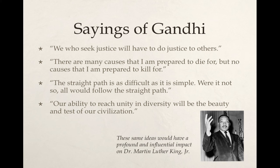Some sayings of Gandhi that give a good idea of what he was trying to do: 'We who seek justice will have to do justice to others.' 'There are many causes that I am prepared to die for, but no causes that I am prepared to kill for.' 'The straight path is as difficult as it is simple.' 'Were it not so, all would follow the straight path.' 'And our ability to reach unity in diversity will be the beauty and test of our civilization.' In many ways, these are very similar ideas to what Martin Luther King Jr. preached in the late 1950s and 1960s in the United States during the Civil Rights Movement.